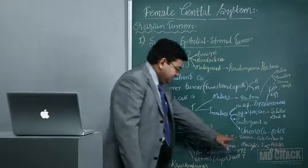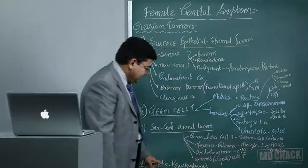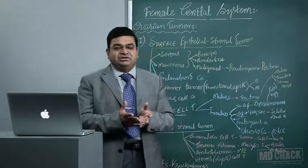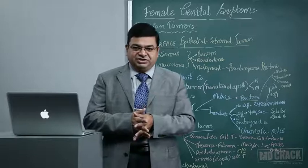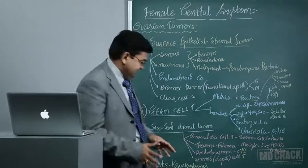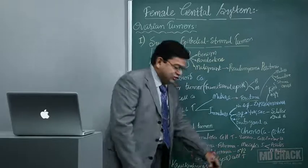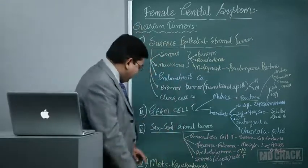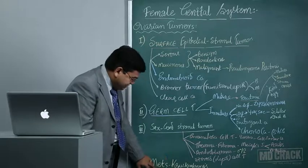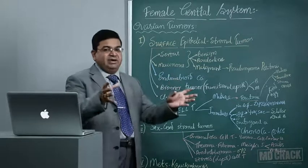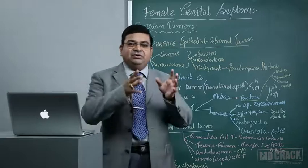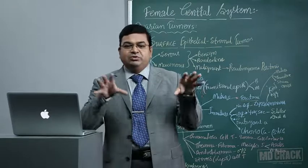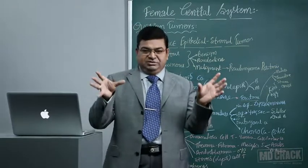Microscopically, granulosa cell tumors show Call-Exner bodies — an important exam finding — and cells have a coffee bean appearance of the nucleus. The thecoma fibroma group causes a peculiar condition: Meigs syndrome, seen in patients with bilateral fibromas and thecomas, presenting with ascites and right-sided hydrothorax. Androblastomas can cause masculinization or feminization. Steroid or lipid cell tumors are rare and secrete steroids.